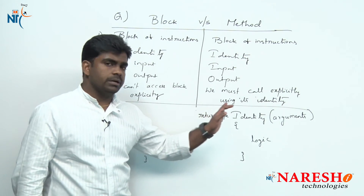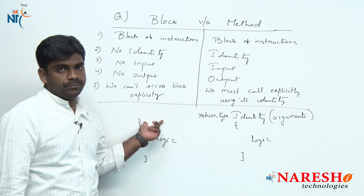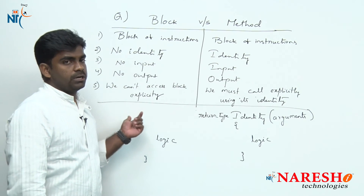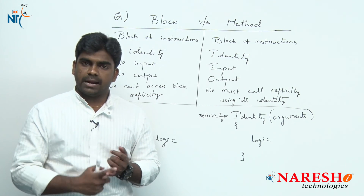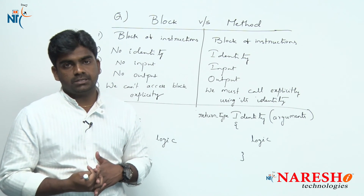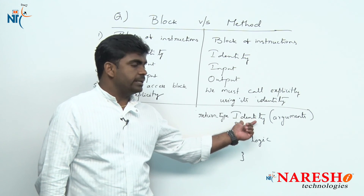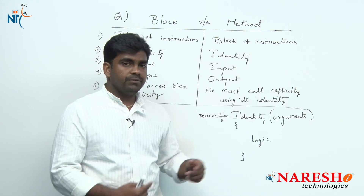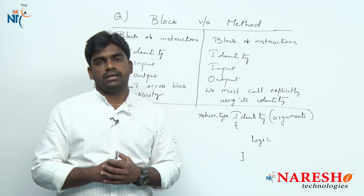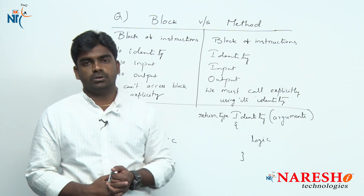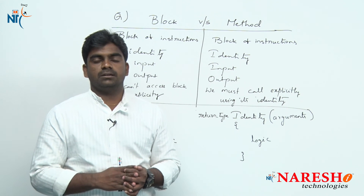In conclusion, both are blocks of instructions. A block has no identity, takes no input, gives no output, and executes automatically — whether it is a static block or non-static block, it executes implicitly in a Java application. But if it is a static method or non-static method, you have to call it externally because the identity is clear, you pass input, and collect the output. This is briefly what a block and a method are. Hope you understood clearly. For more videos, please subscribe to the Nourish IT channel. Thank you all.